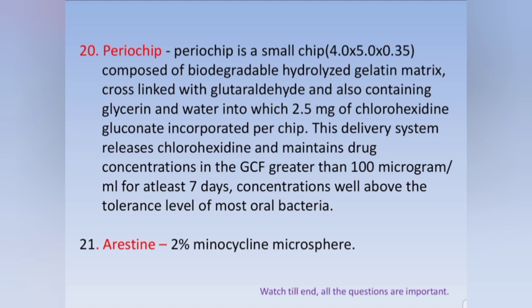Periochip contains 2.5 mg of chlorhexidine gluconate incorporated into the gelatin matrix. This delivery system releases chlorhexidine and maintains drug concentrations in GCF greater than 100 micrograms per mL for at least seven days — above the tolerance level of most oral bacteria. Arestin is 2% minocycline microspheres.